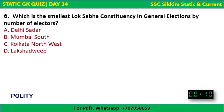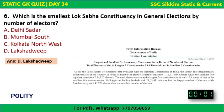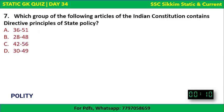Polity Question 1: Which is the smallest Lok Sabha constituency in terms of number of electors? The correct answer is Lakshadweep. Lakshadweep is the smallest parliamentary constituency, with a total of 47,972 electors as of 20th March 2014.